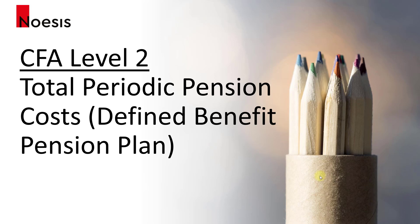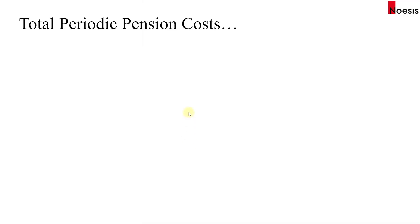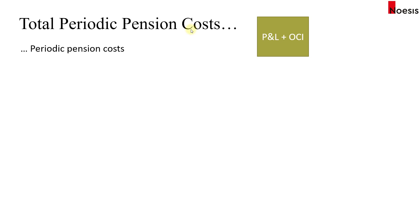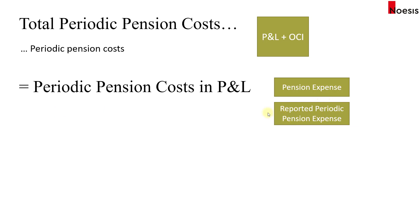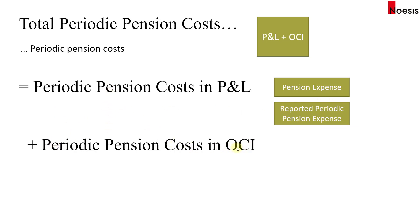In this video, we'll be looking at the total periodic pension costs under the defined benefit pension plan. The total periodic pension cost, also called the periodic pension cost, covers pension costs both in the P&L as well as in other comprehensive income (OCI). So the total periodic pension cost equals the periodic pension cost in the P&L — which the textbook calls pension expense or reported periodic pension expense — plus the periodic pension cost in OCI. We'll first look at the components under IFRS and US GAAP.